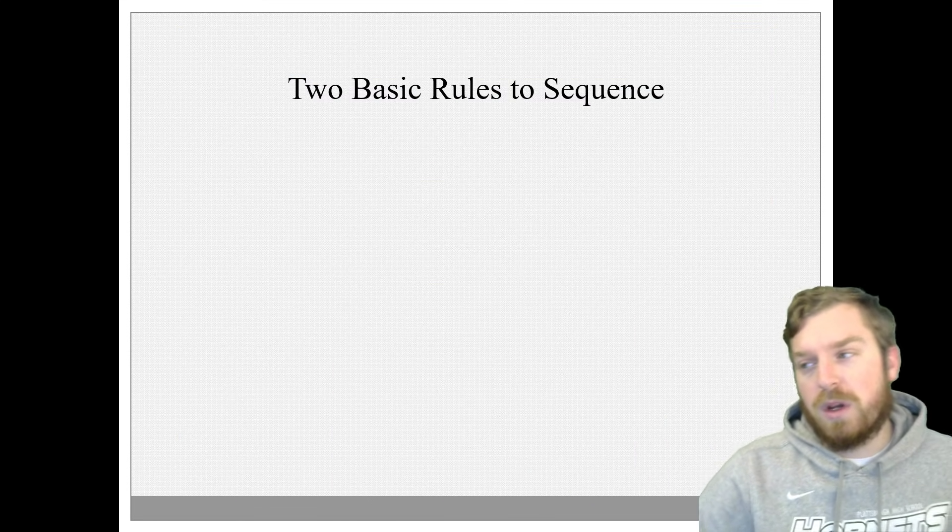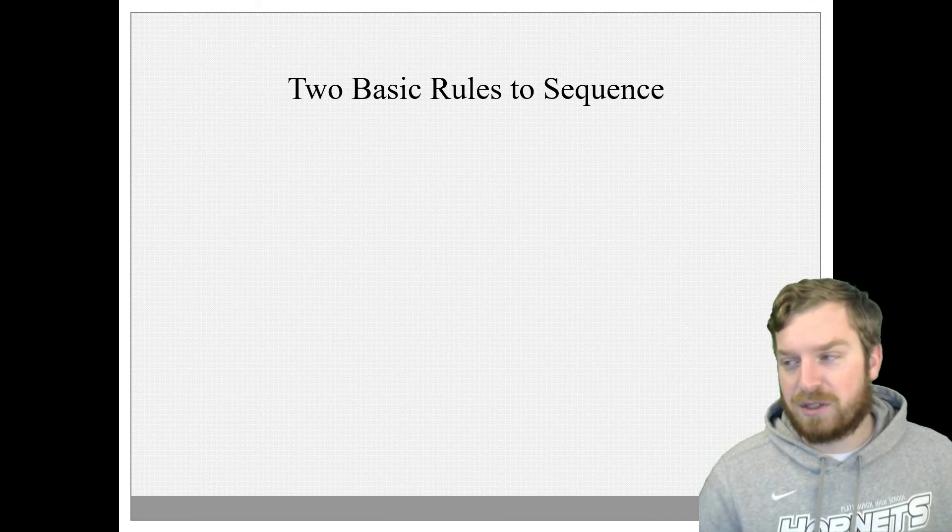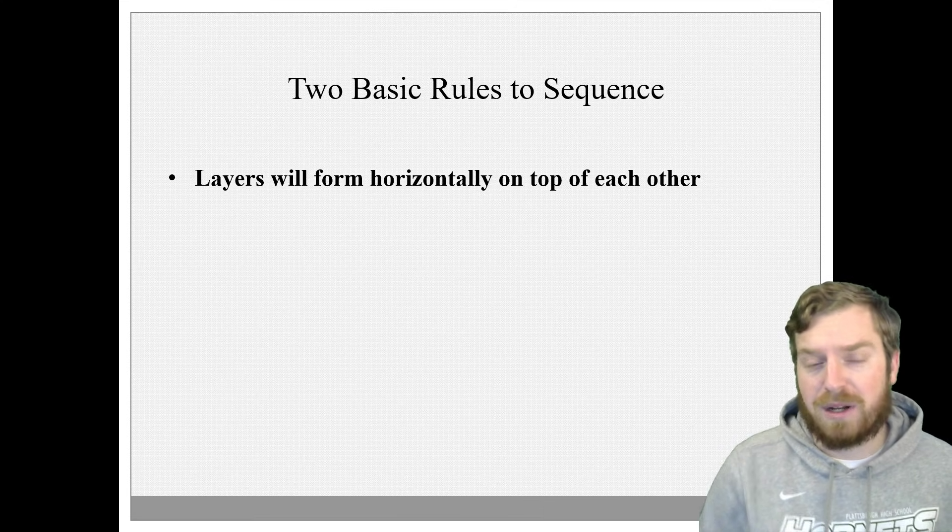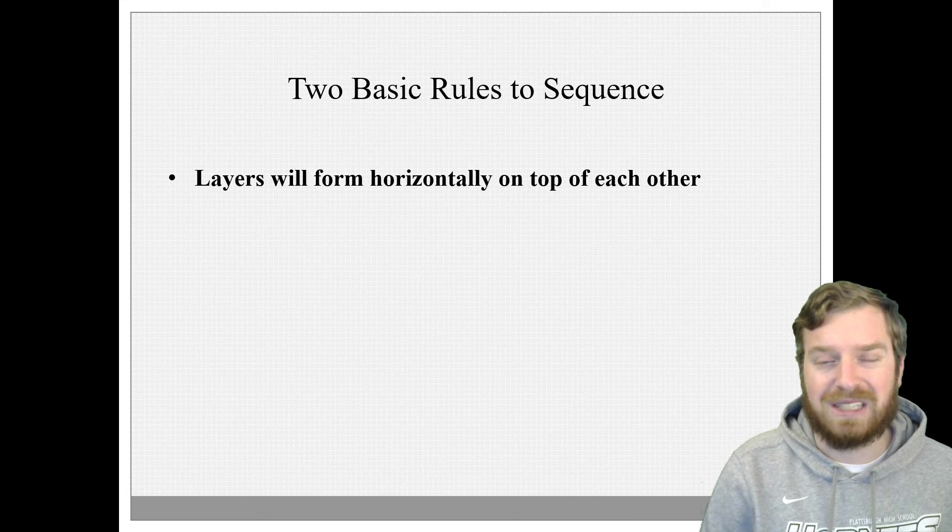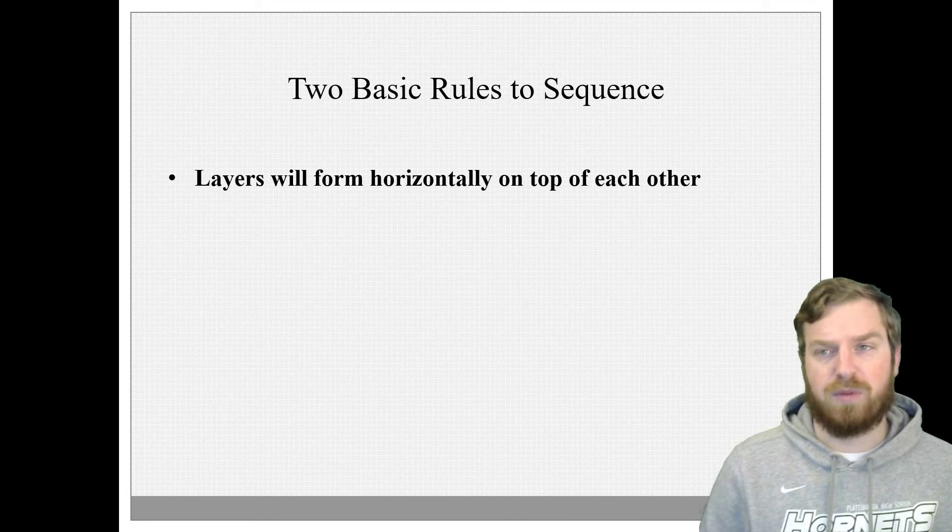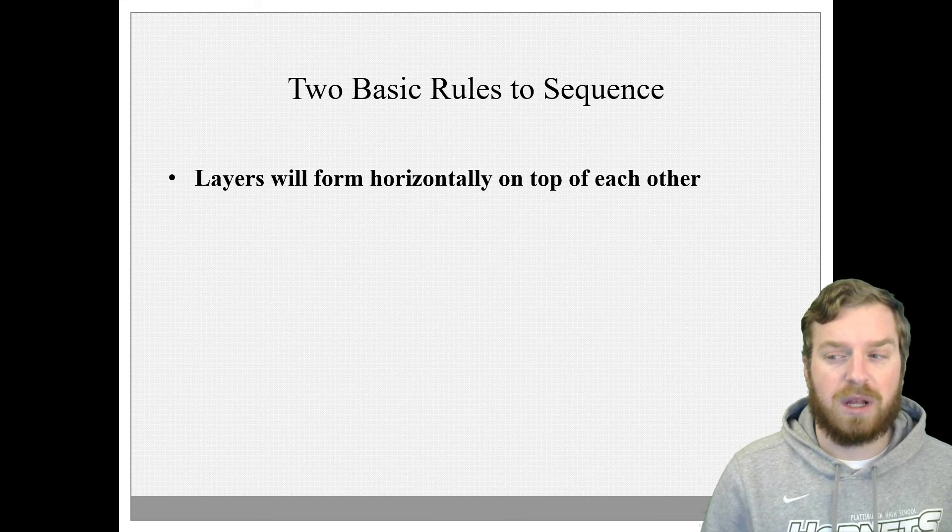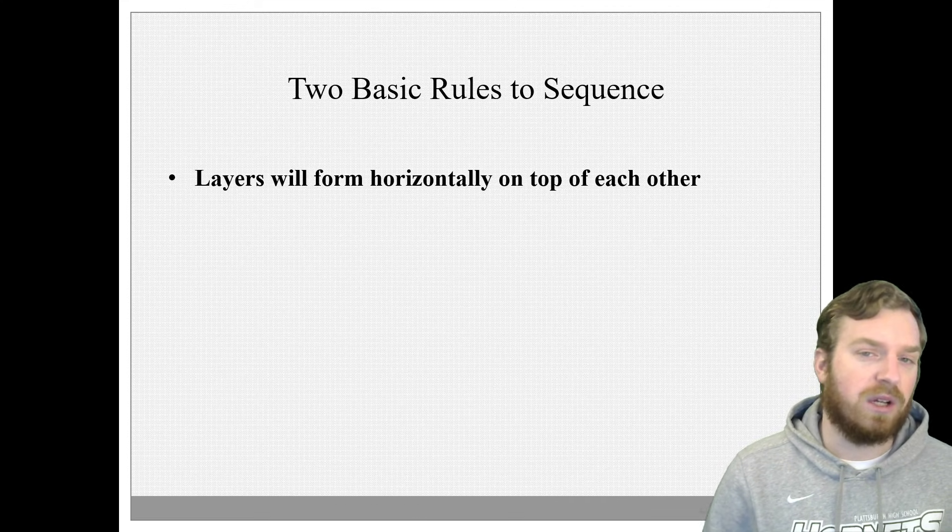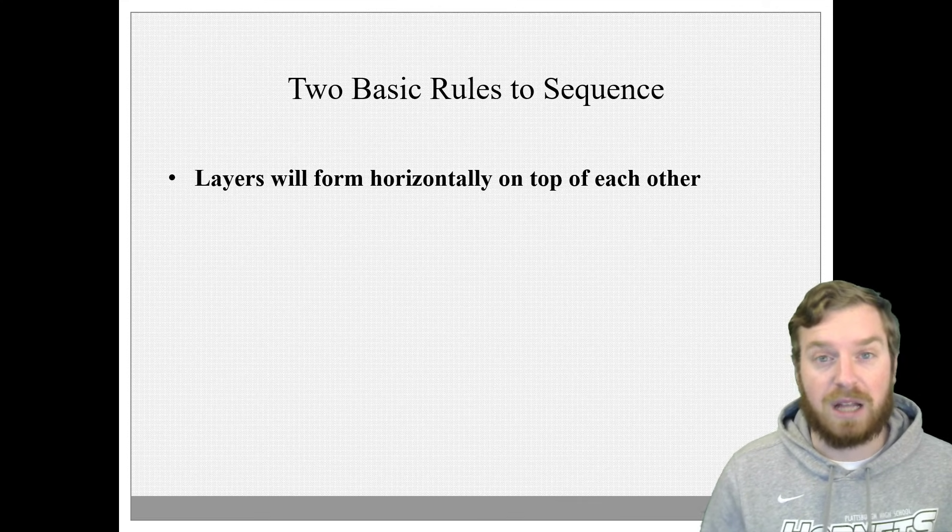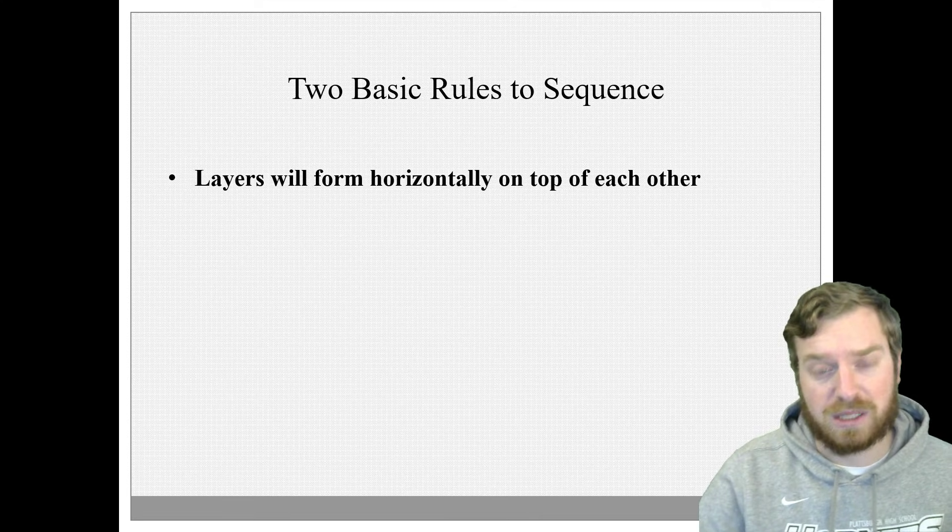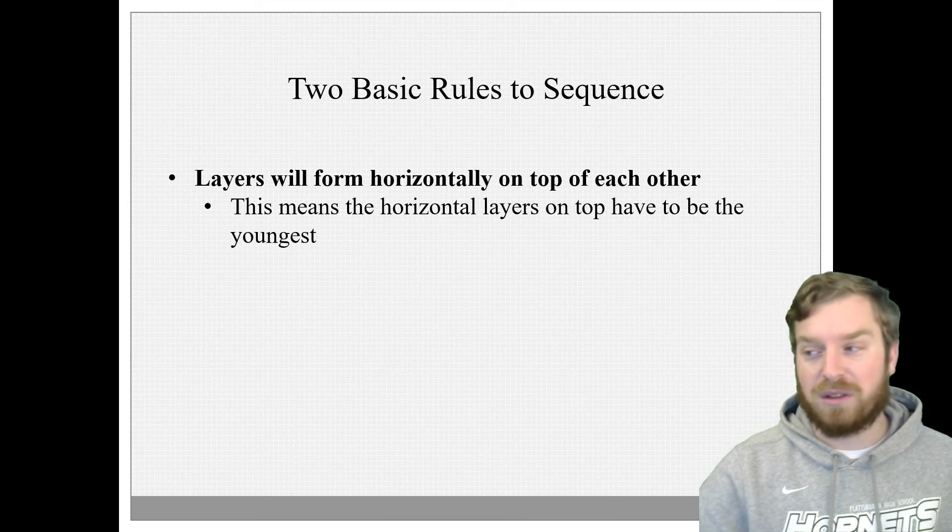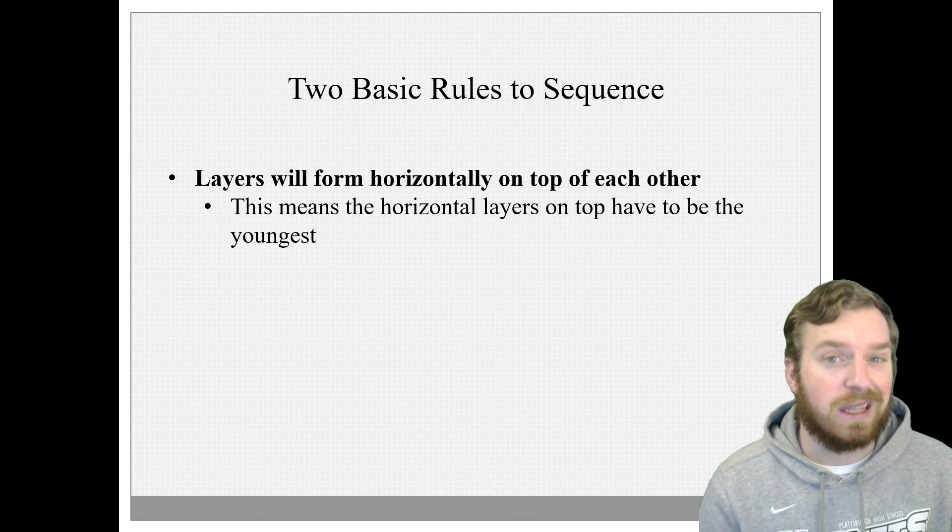So two basic rules to sequence any of these cross sections. First and foremost, and this is something that we've already talked about, is that layers will form horizontally, just naturally. A soil layer will naturally form horizontally on top of what was already existing there. And this gives you a really good idea of the basic order to things, because if something formed horizontally on top of what was already present, that means that the horizontal layer on top is younger than the horizontal layers underneath it.